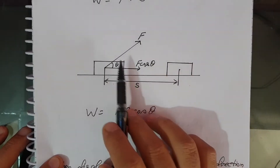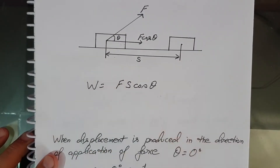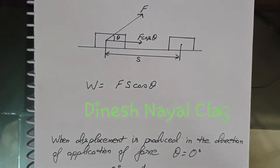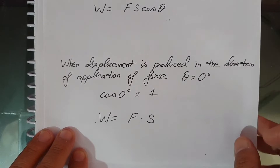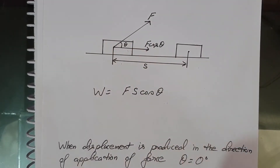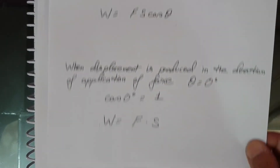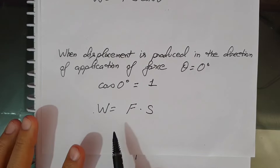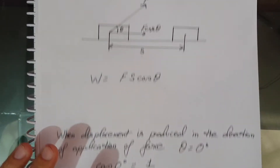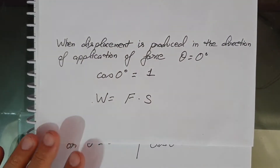If theta is the smaller angle between F and S, then W = Fs cosθ. When displacement is produced in the direction of application of force, theta is zero degrees, because force and displacement are both acting in the same direction. We know that cos 0° = 1, so W = F · S when they are in the same direction.